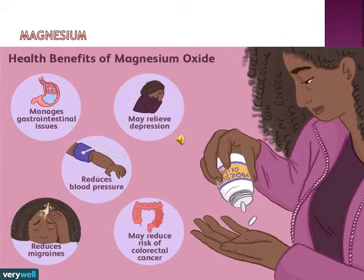Magnesium is a constituent of bones and is present in all body cells. The adult human body contains about 25 grams of magnesium. About half is found in the skeleton. Magnesium appears to be essential for the normal metabolism of calcium and potassium. Magnesium deficiency may occur in chronic alcoholics, cirrhosis of the liver, toxemia of pregnancy, protein-energy malnutrition, and malabsorption syndrome.